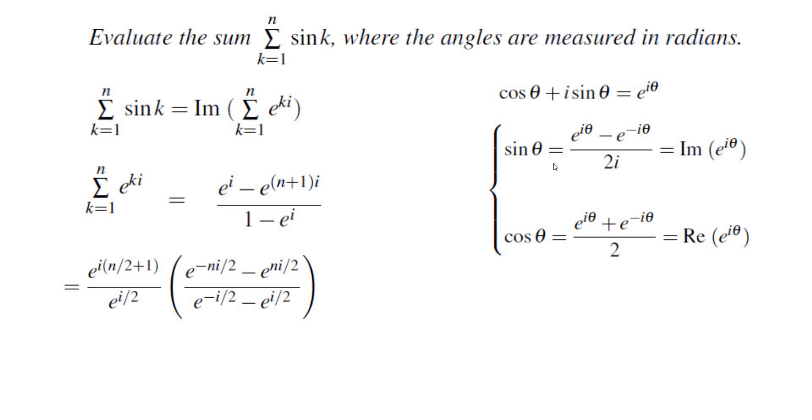Now, I'm able to use the formulas for sine. Sine is e to the power of i theta minus e to the power of negative i theta over 2i. So the numerator becomes negative 2i sine of n over 2 and the denominator becomes negative 2i sine of 1 over 2.